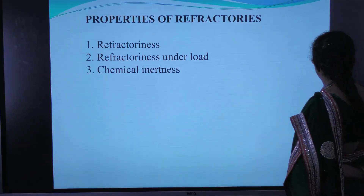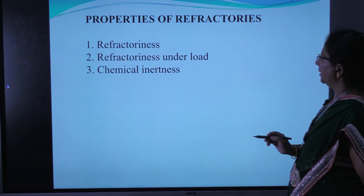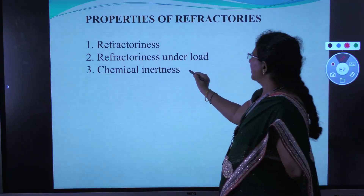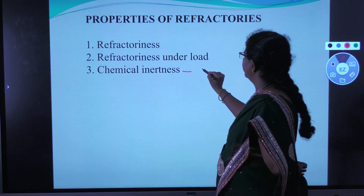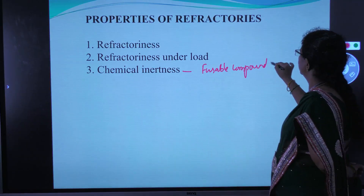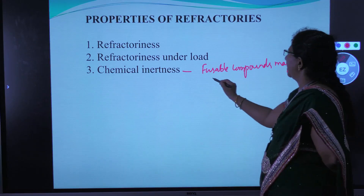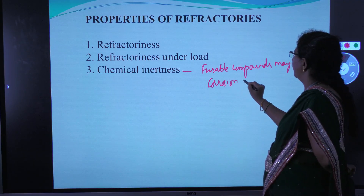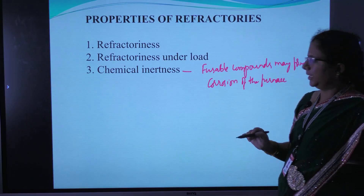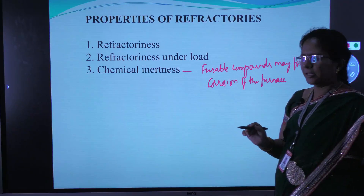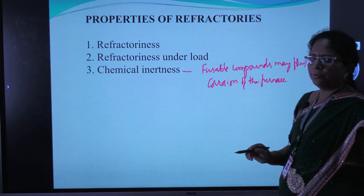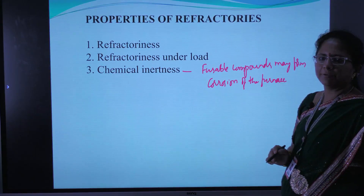The next property is chemical inertness. A refractory material should be chemically inert because the furnace may contain several chemicals, and the refractory material may react with those chemicals, forming fusible compounds or causing corrosion of the furnace. If the refractory is not chemically inert, it may form fusible compounds with the chemicals available in the furnace or cause corrosion. Therefore, a better guideline is not to use acidic refractories in a basic furnace and not to use basic refractories in an acidic furnace.